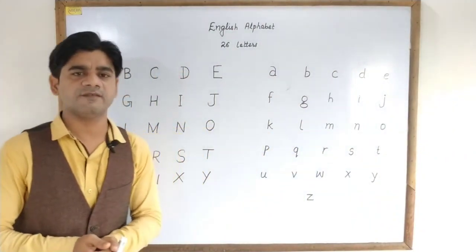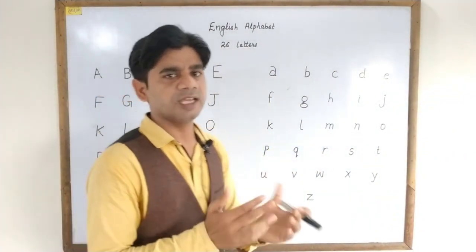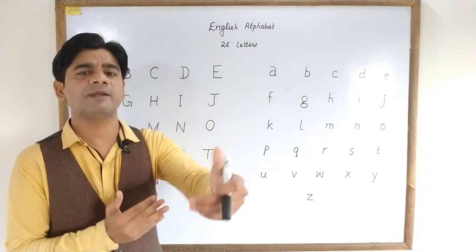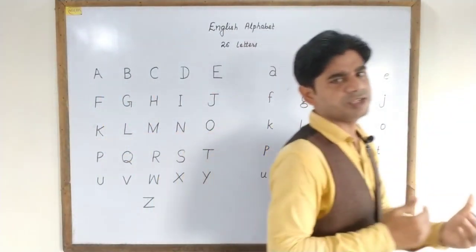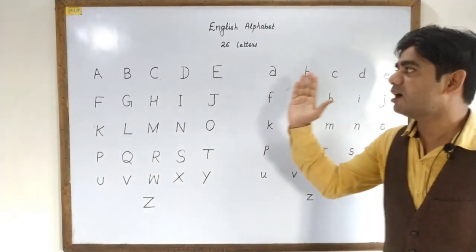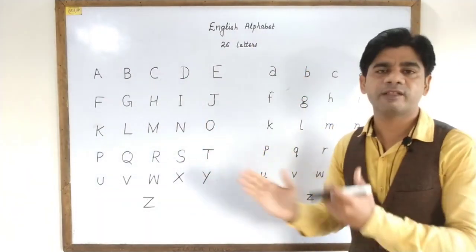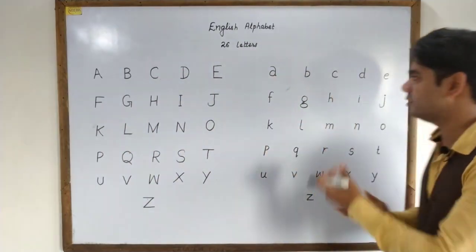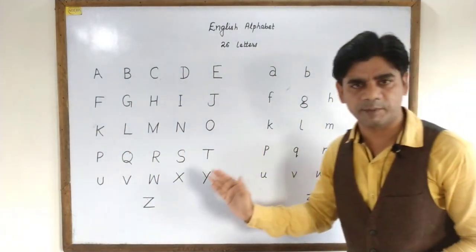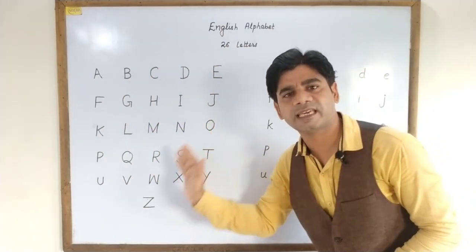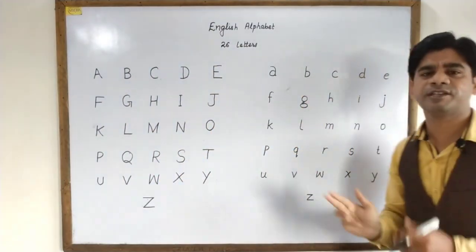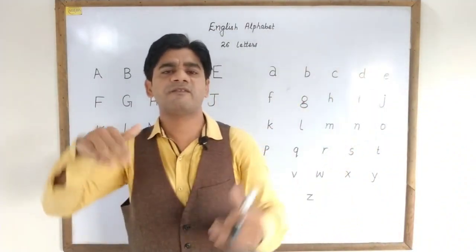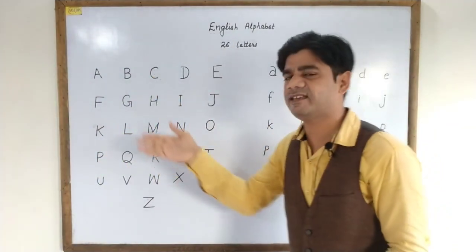The first topic of today's video session is about the English alphabet. As we already know, to learn as well as speak any language it is necessary to know the alphabet of that particular language. There are 26 letters present in the English alphabet. These are the 26 English letters written in capital, whereas these are the 26 English letters written in small. This video is not only for beginners but also for those learning English at an intermediate or advanced level who may not know the correct pronunciation of these English letters.